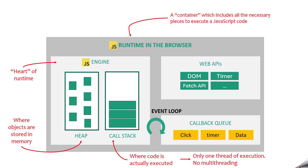JavaScript does not have multi-threading capabilities like other programming languages such as Java or C++. You might ask: if JavaScript is single-threaded and executes code line by line, how does asynchronous programming work in JavaScript? That's where the web APIs come into picture.